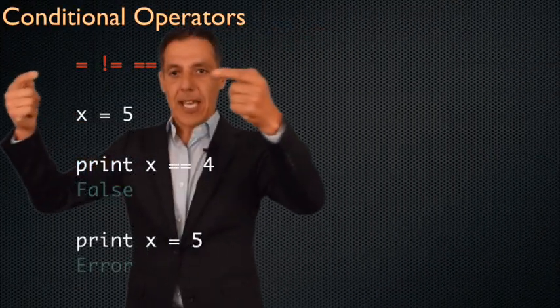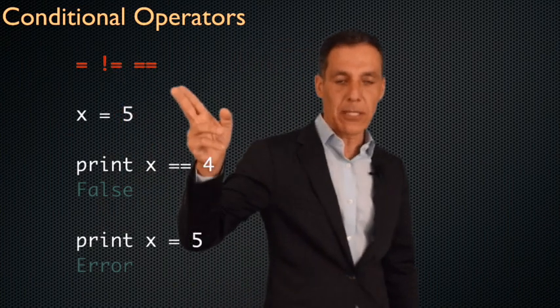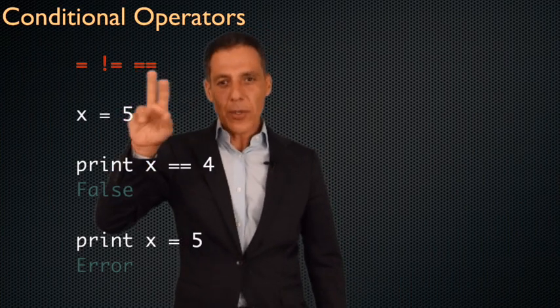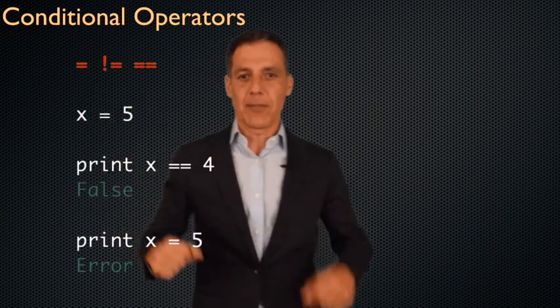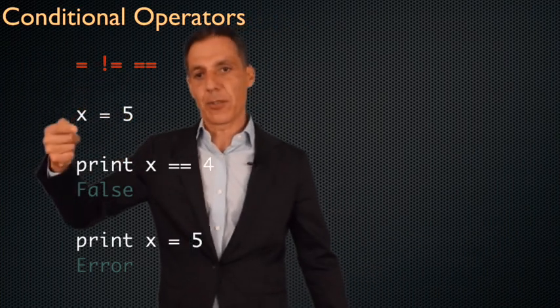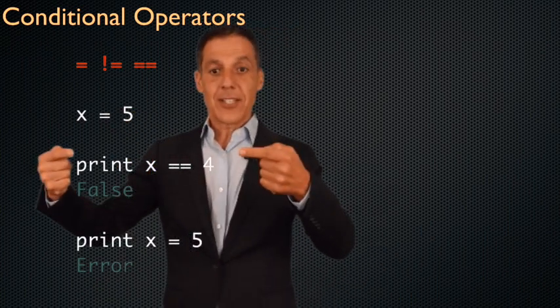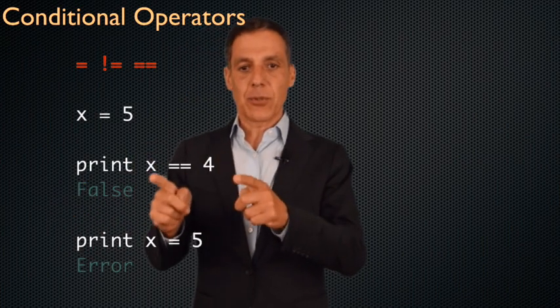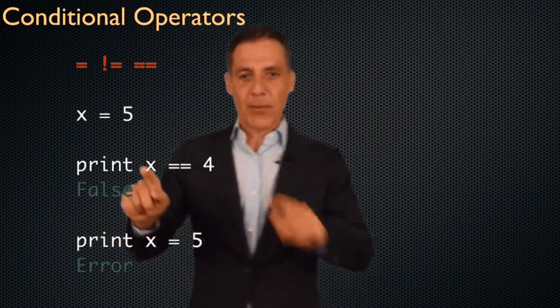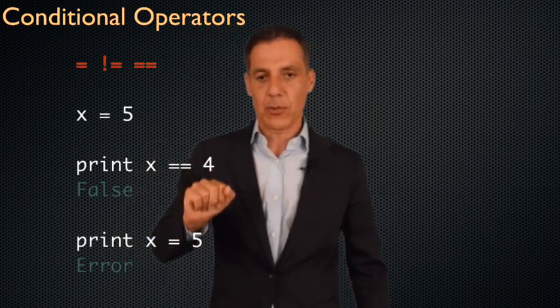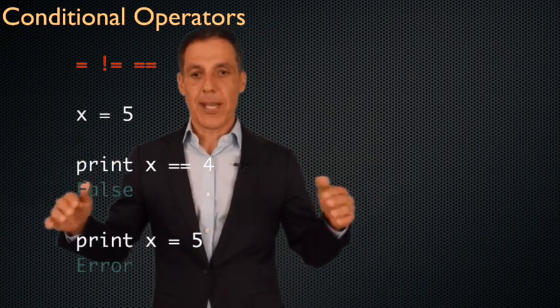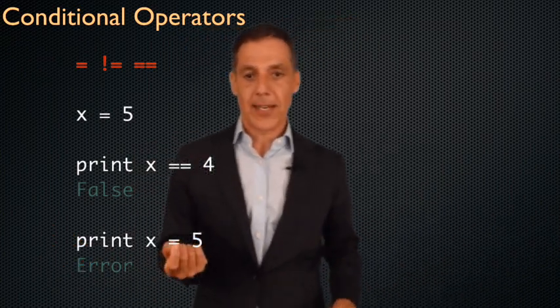I want to emphasize again and again because this is a bug that will keep biting you is that equal does not equal equal equal. This is the assignment operator and this is the test for equality. So early on as you're coding when you see this say equality and say assignment and that'll get you in the habit of it. This is an assignment operator. It assigns the value five on the right hand side to the variable x on the left hand side. This is a test for equality. Please print for me whether x is equal to four or not. It is not because x is five so this evaluates to false and I print false. If I say print x equals five, python says I have no idea what you're talking about. You're asking me to print the result of an assignment operator and that makes no sense at all.